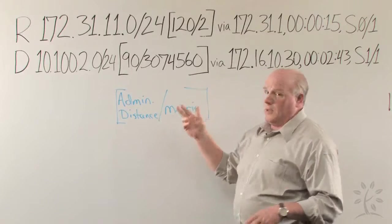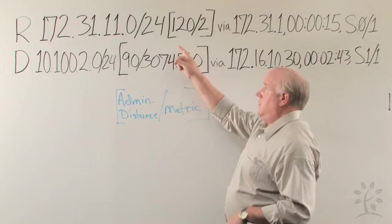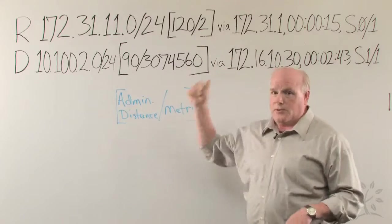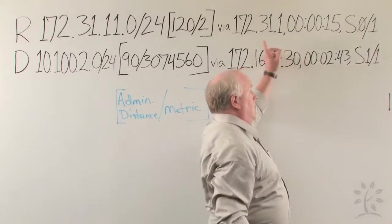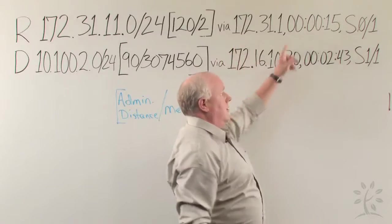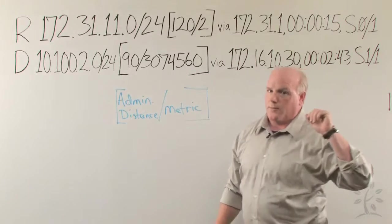So RIP is pretty simple, and it knows that there's two hops to the destination, and it will run via this network, out serial interface one.